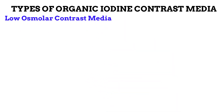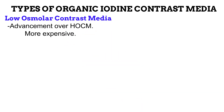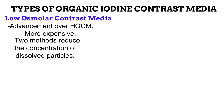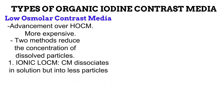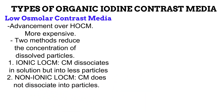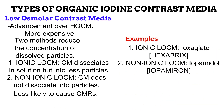Next is the low osmolar contrast media. These are an advancement over the high osmolar type and are currently more expensive. To produce contrast media with low osmolality, you need to reduce the concentration of dissolved particles. This can be achieved by two methods. First, ionic low osmolar contrast media — these still dissociate in solution, like high osmolar contrast media, but are made to dissociate into fewer particles. Second, non-ionic low osmolar contrast media — this type does not dissociate into more particles, meaning fewer particles are present. With a low concentration of dissolved particles in both methods, the chances of contrast media reactions are reduced. Examples include ioxaglate, commonly marketed as Hexabrix, and iopamidol, commonly marketed as Iopamiro.